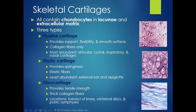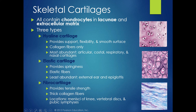Hyaline cartilage provides a very smooth surface with a lot of flexibility and support. It has a lot of water in its extracellular matrix, so it's very resilient. Elastic cartilage has elastic fibers in it, so it's very springy and rebounds quite nicely. Fibrocartilage is the toughest of the cartilaginous tissues because it has very thick collagen fibers that provide a lot of tensile strength — it would be very hard to tug apart.